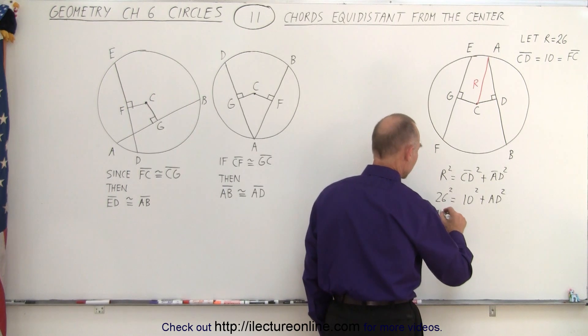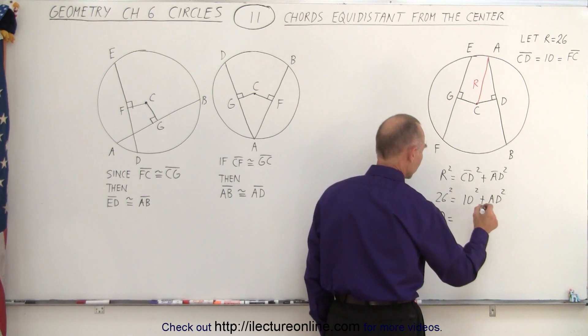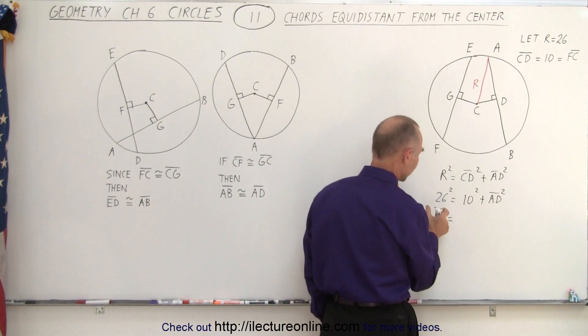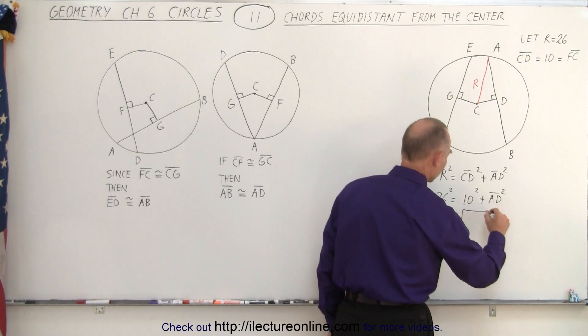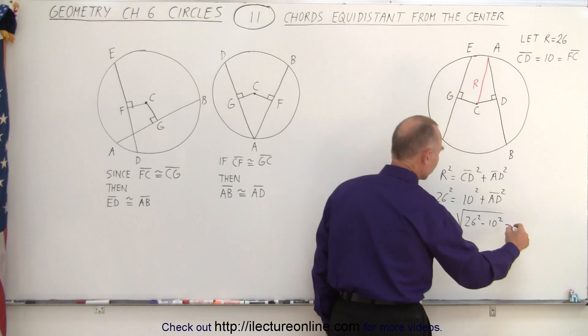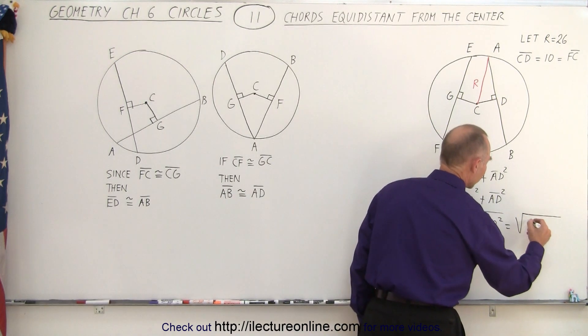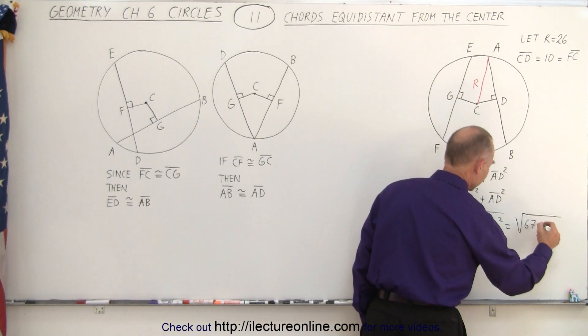So then we say that A to D is therefore equal to the square root of 26 squared minus 10 squared which is equal to the square root of 676.